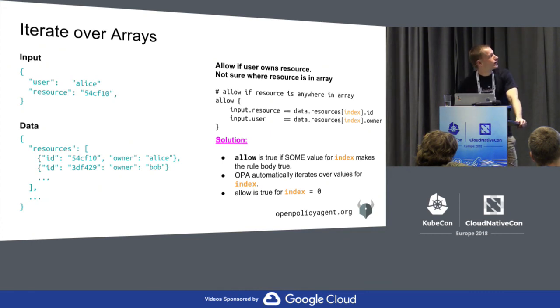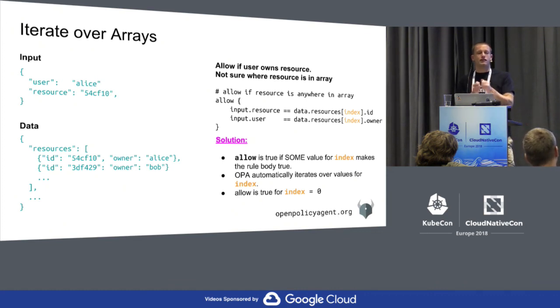If you see the same variable in multiple places within a rule, it must be assigned the same value.